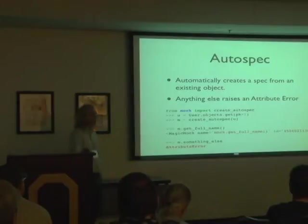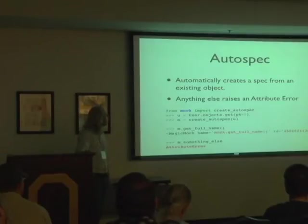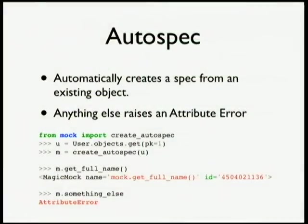There's also something called auto spec. You can imagine that if you have a pretty complex object, typing out the spec is a bit time consuming. Auto spec is a tool that will introspect an object and create a spec based on what you have. So if I have a Django user, I can create an auto spec from a Django user with mock's create_autospec function. I grab an instance of a user, pass that instance to create_autospec, and I suddenly have a mock object that looks and acts just like a Django user object.